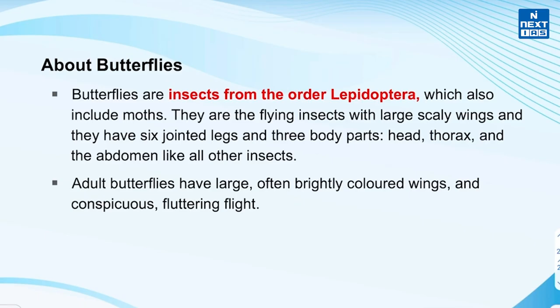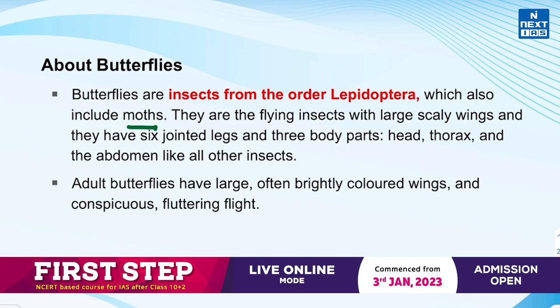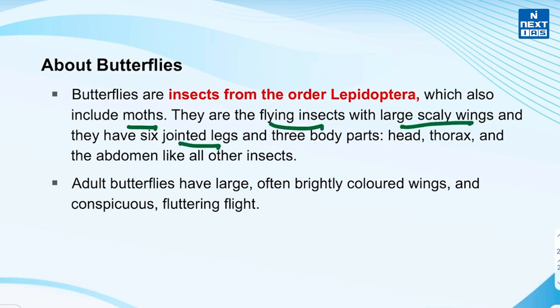Let's learn some key facts about butterflies. They are insects from the order Lepidoptera, which also includes moths. They are flying insects with large scaly wings and have six jointed legs and three body parts — head, thorax and abdomen — like other insects. Adult butterflies have large, often brightly colored wings and a conspicuous fluttering flight.